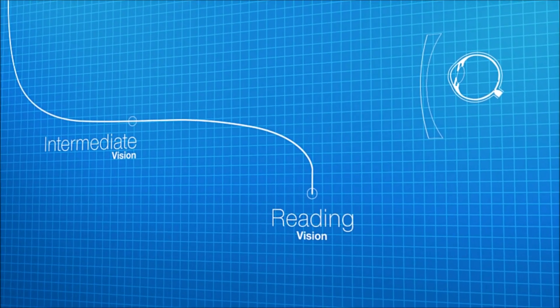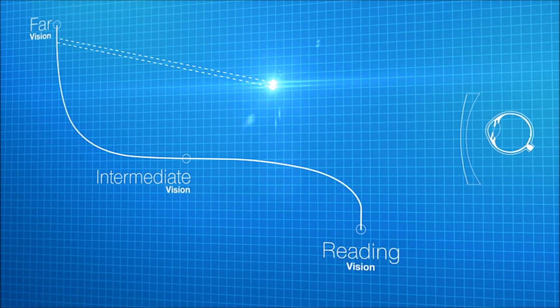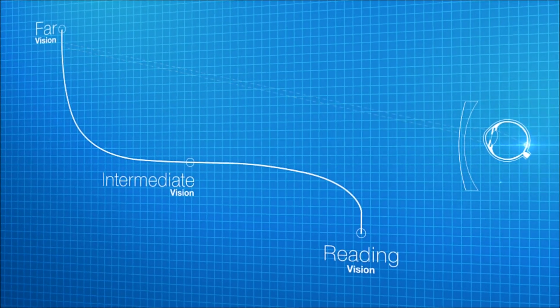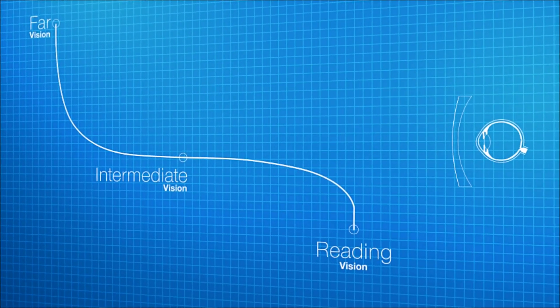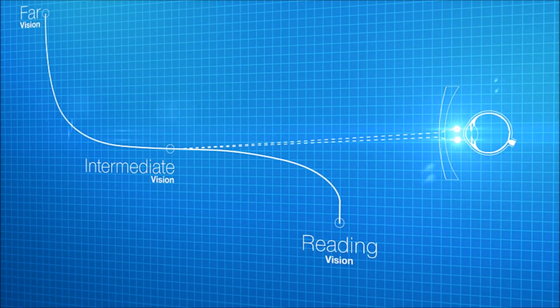In the upper part of the lens, designed for far vision, the passage of rays coming from distant objects is simulated. In addition, the calculation takes into account the vertical movement of the eye and simulates the rays representing intermediate vision.